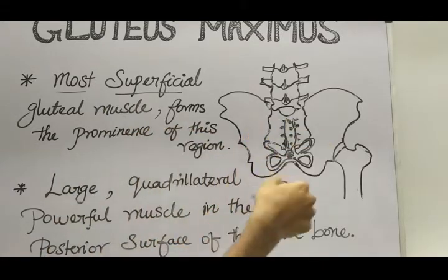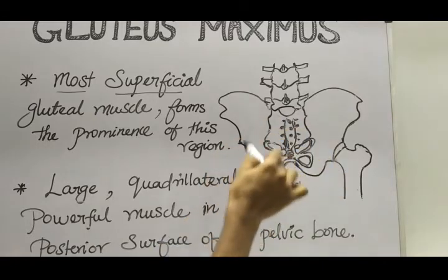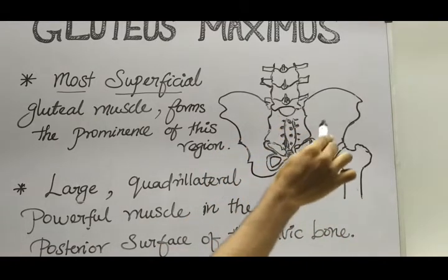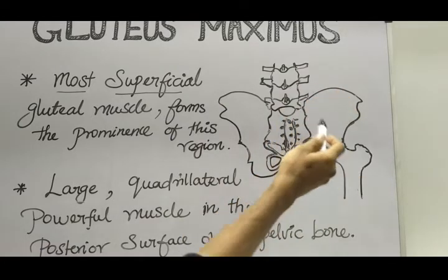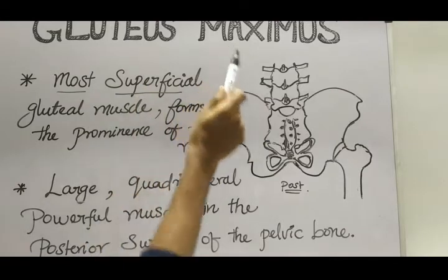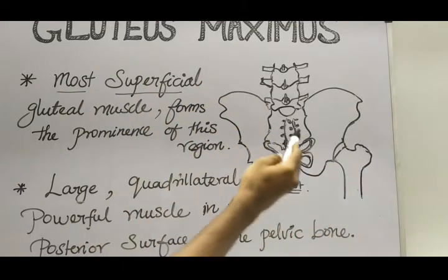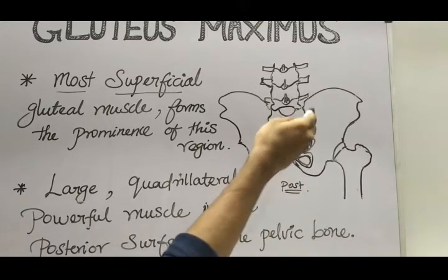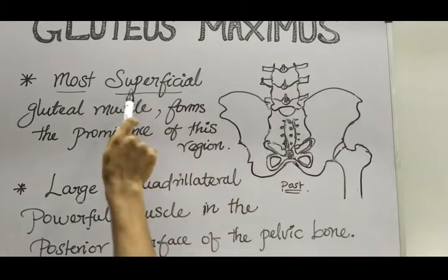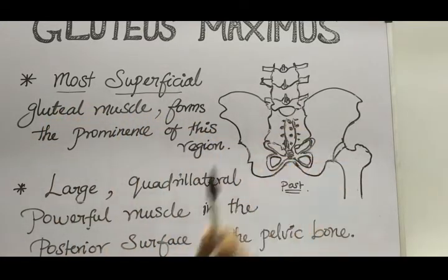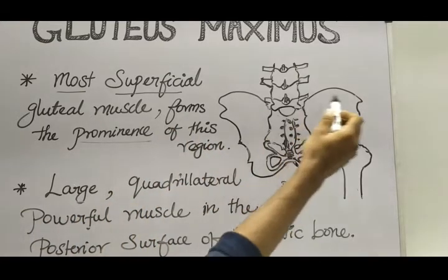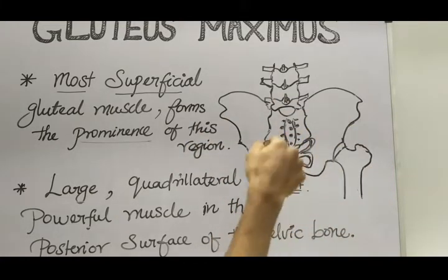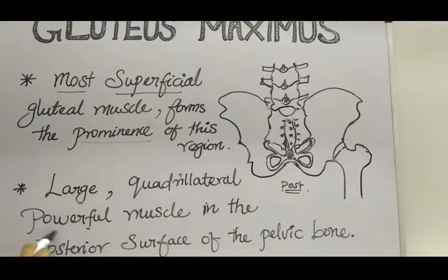Here you can see the posterior aspect of the pelvic bone — this is the gluteal region, which we call the buttock region. The gluteus maximus muscle is present here along with other gluteal muscles: gluteus medius, gluteus minimus, and tensor fasciae latae. This muscle is the most superficial of all other gluteal muscles and forms the prominence of this region. It is a large, quadrilateral, and powerful muscle.